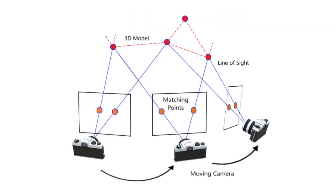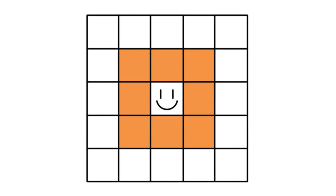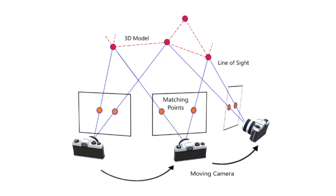The software looks for matching points that are shared between images. These matching points are used to correlate points in space that form the three-dimensional model. A matching point is created by the software by identifying pixel neighborhoods — or as I like to call them, happy pixel neighborhoods. They are a pixel surrounded by all its closest friends that create distinct groupings that can be registered by the software. The matching points are the key to the creation process.